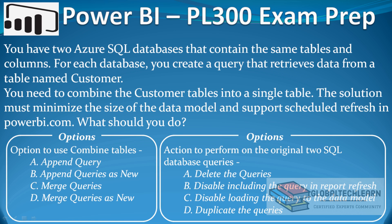Now here we have to understand there are two requirements we have to achieve from the given data. The first is we have to combine the two tables which are coming from two databases. And the second is we have to minimize the size of the data model. So let's first look at the data and then we will focus on the requirements.